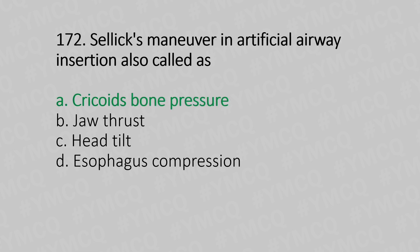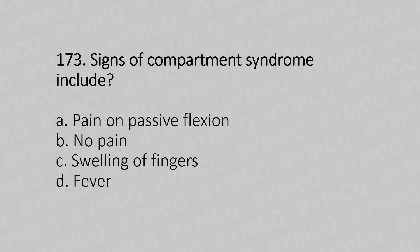Question 173: Signs of compartment syndrome include — Option A: Pain on passive flexion, Option B: No pain, Option C: Swelling of fingers, Option D: Fever. And the answer is Option C, swelling of fingers.